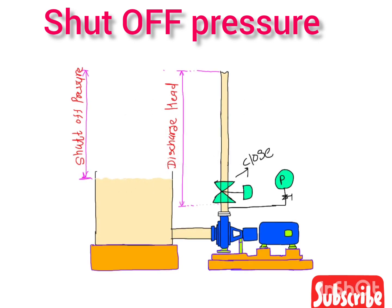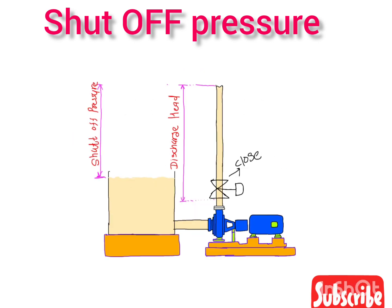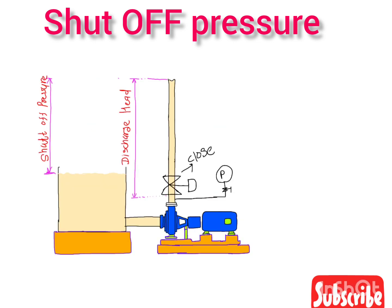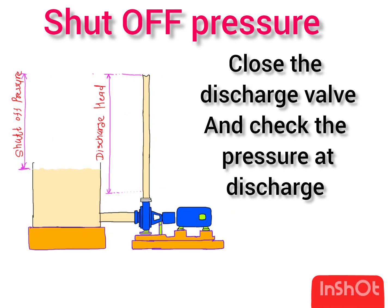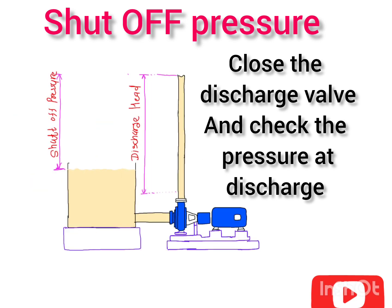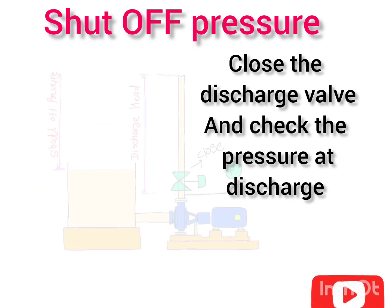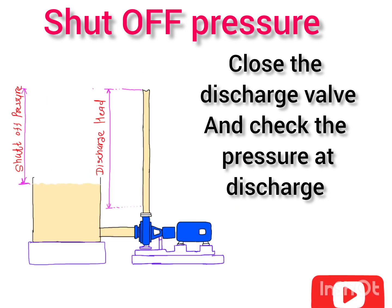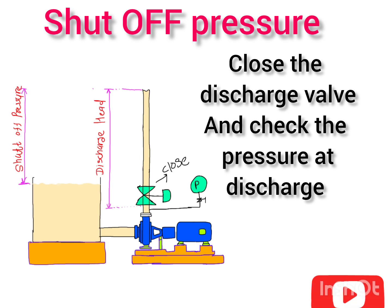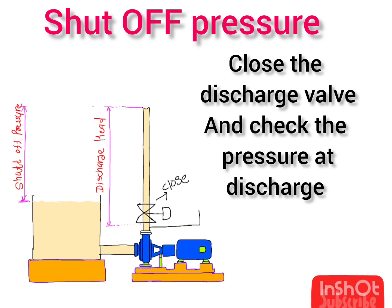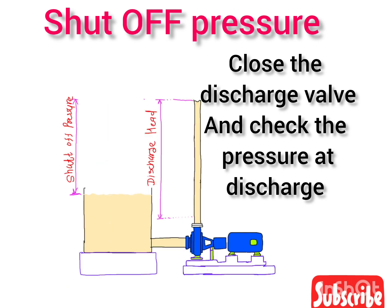If you want to know what is the shut-off pressure in your centrifugal pump, just close the outlet discharge valve of the centrifugal pump and see what is the maximum pressure that the pump generates on the discharge side. That maximum pressure on the discharge side is nothing but your shut-off pressure.